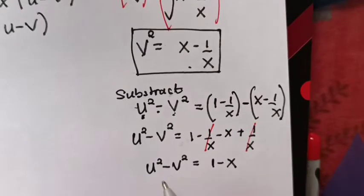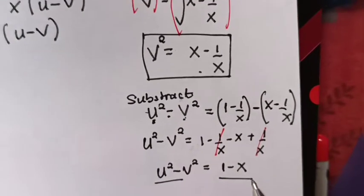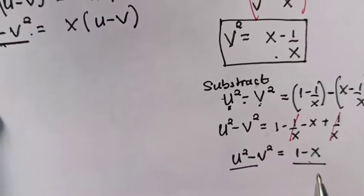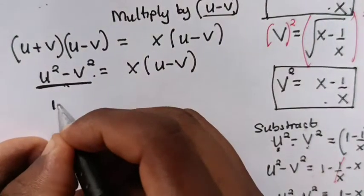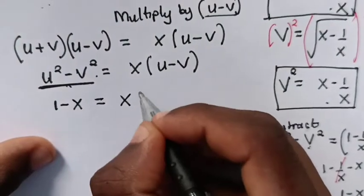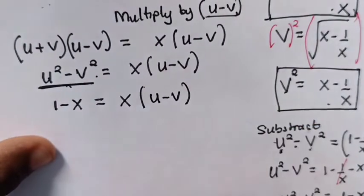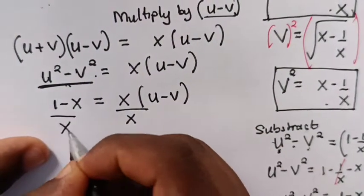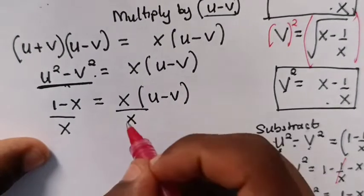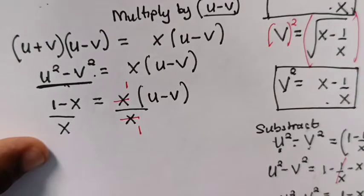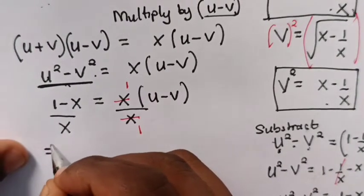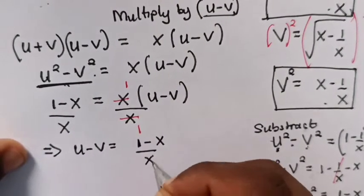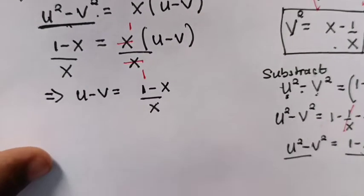We now have the value of u squared minus v squared. So substituting: 1 minus x is equals to x times bracket u minus v. We divide both sides by x. The x cancels, so u minus v is equals to 1 minus x divided by x.